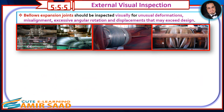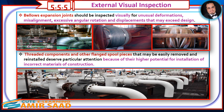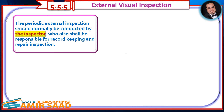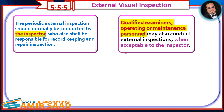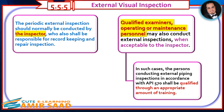Bellows expansion joints should be inspected visually for unusual deformations, misalignment, excessive angular rotation, and displacements that may exceed design. Threaded components and other flanged spool pieces that may be easily removed and reinstalled deserve particular attention because of their higher potential for installation of incorrect materials of construction. The periodic external inspection should normally be conducted by the inspector, who is also responsible for record-keeping and repair inspection. Qualified examiners, operating or maintenance personnel may also conduct external inspections when acceptable to the inspector, provided they are qualified through appropriate training per API 570.